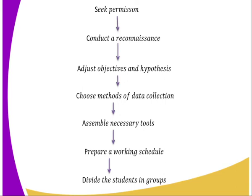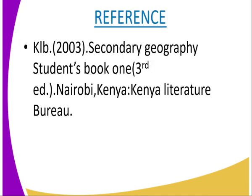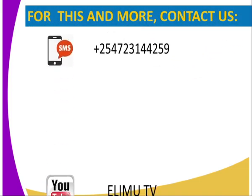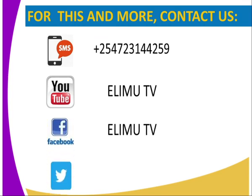That is the work we will cover in our next lesson. Activity for today: explain four characteristics of a good hypothesis, and highlight the fieldwork preparation procedure. Reference book: GRB 2003 Secondary Geography Student Book 1. If you want to contact us, you can reach us via SMS, YouTube, Facebook, or Twitter. Thank you.